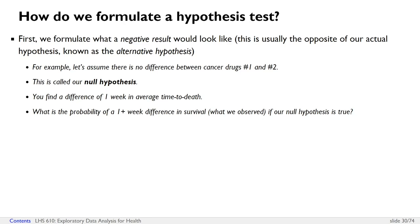I know there are a lot of double negatives there, so let me walk through that one more time. Our null hypothesis was that there's no difference between cancer drugs number one and two. Our data set is a sample — it's not all of the data on everyone who could possibly have gotten the drug, just a random sample of the population.